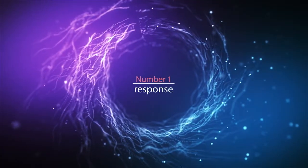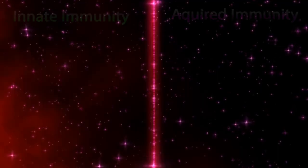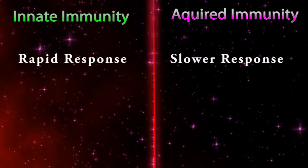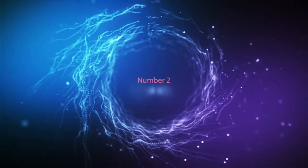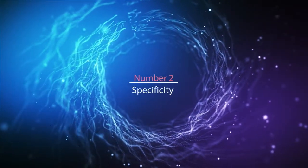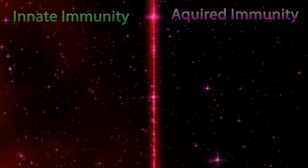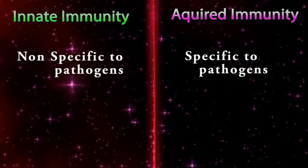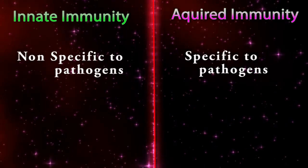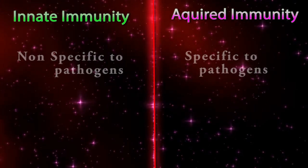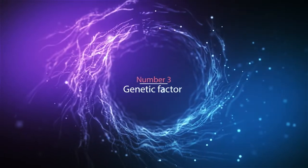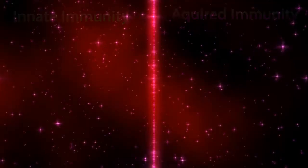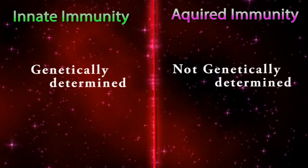Difference number one — response: innate immunity response is always more rapid than acquired immunity. Difference number two — specificity: innate immunity is non-specific to pathogens, but acquired immunity is always specific to the pathogen.